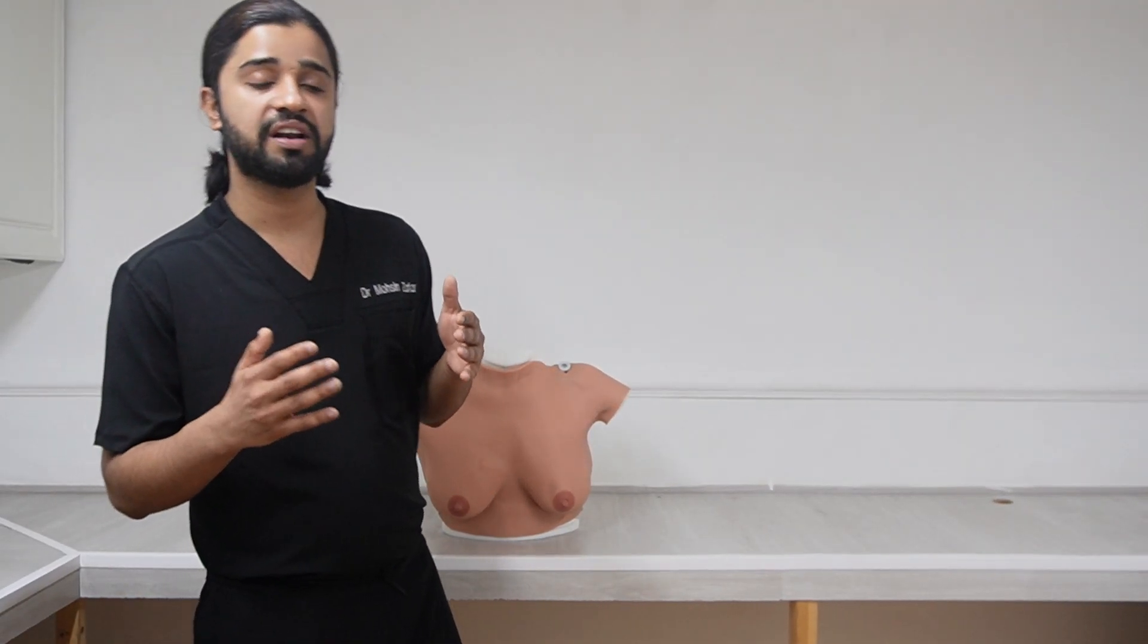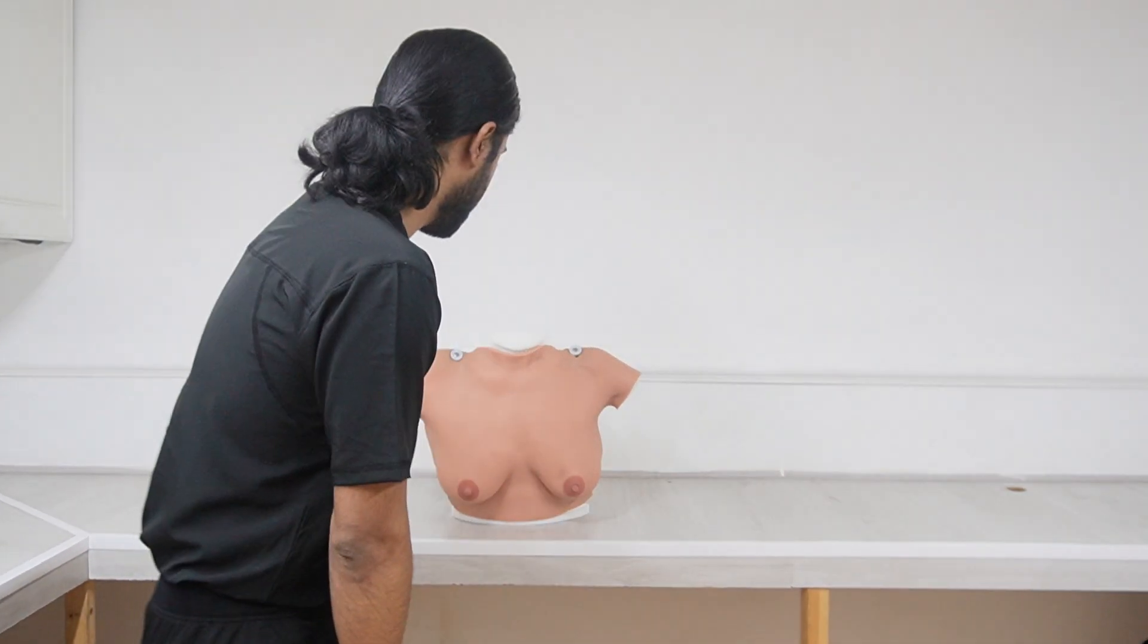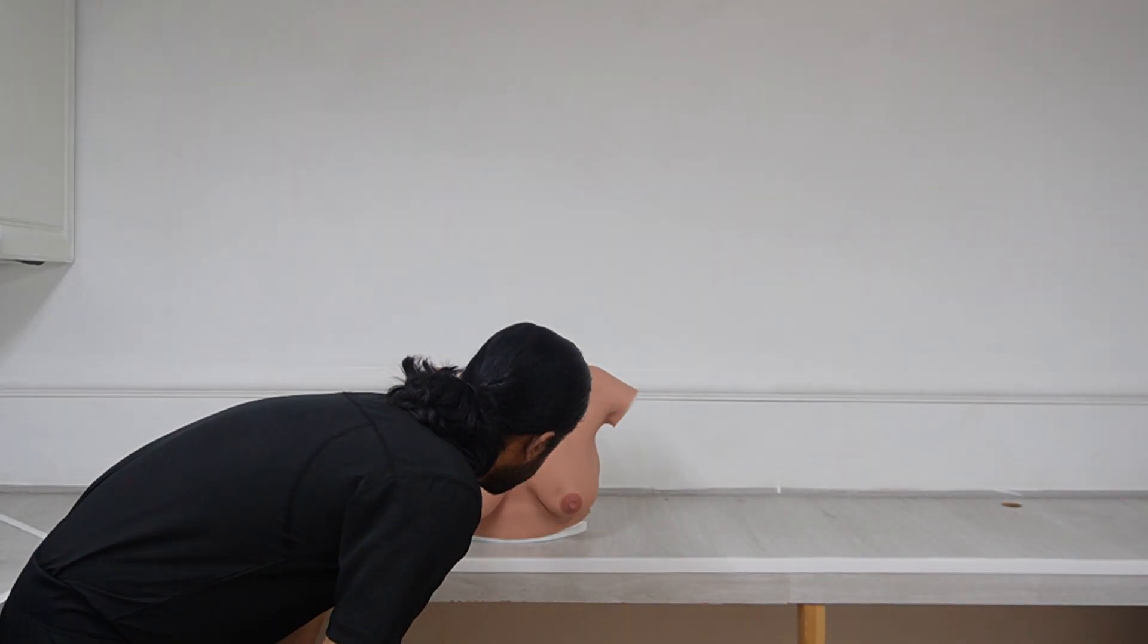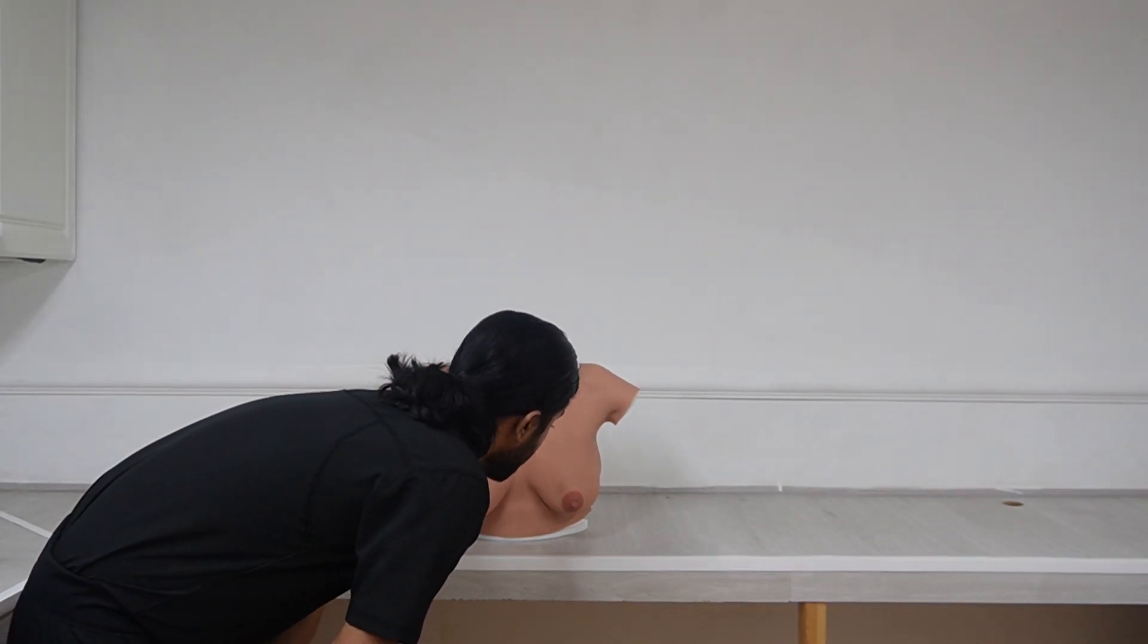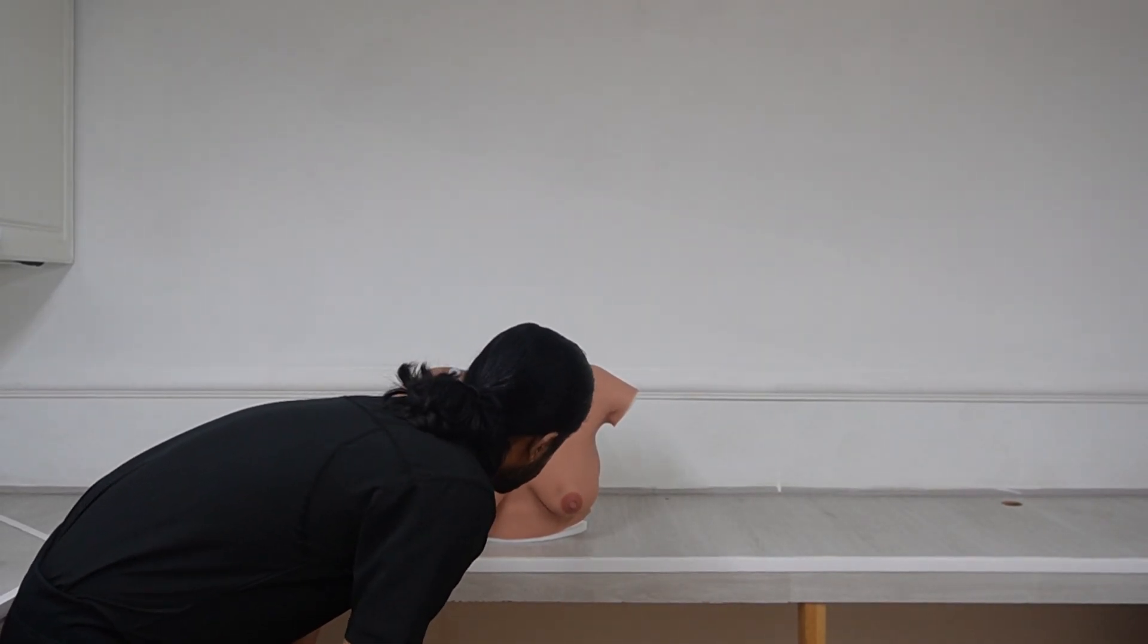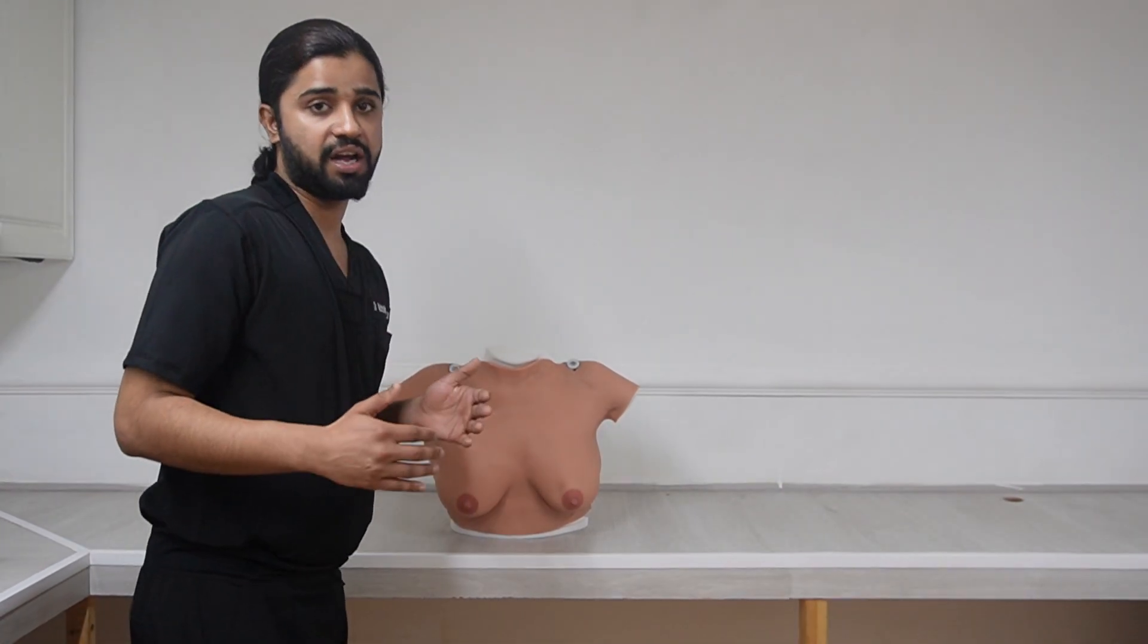Now I am going to start with inspection. First of all, I will ask the patient to place her hands on the lap like this, and then I will be looking at the breast for any asymmetry of both the breasts and nipples, any redness and swelling and discharge, any blood coming out, any visible mass, any skin changes.